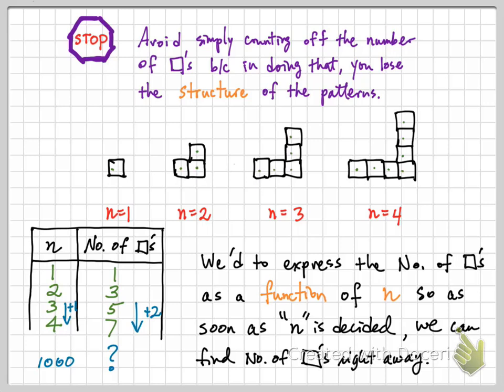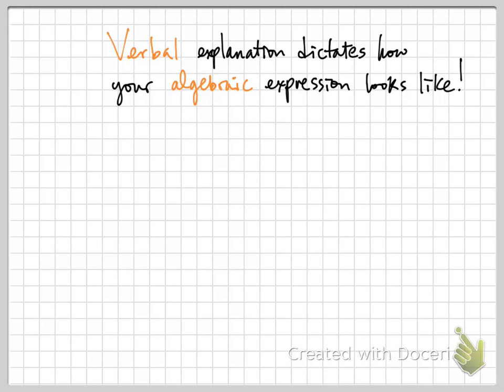Moving forward, we are equipped with the language of the four arithmetic operations. Remember: addition means summing, subtraction means taking things away, multiplication means you have the same set of things added multiple times, and division is the concept of fair share. What we're going to do next is really what makes mathematics a humanistic process — when you look at a sequence of visual patterns, your verbal explanation really dictates how your algebraic expression looks like.